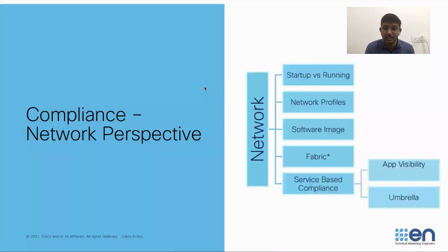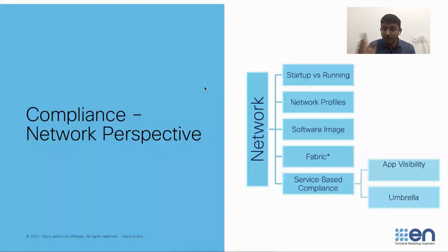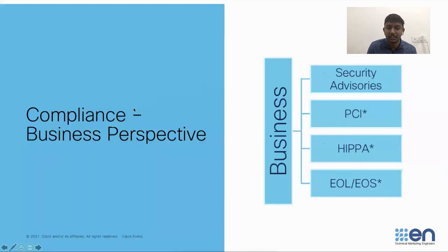On the network compliance side, the features shipping today include startup versus running, network profile, software images, fabric, and service-based compliance - which is app-based or feature-based compliance for things like app visibility, umbrella, or Stealthwatch security analytics. On the business side, you want to see whether your network has PCI or HIPAA standards, end-of-life, end-of-software-maintenance status on network devices, and security advisories. These are available via APIs today and coming to the GUI in the future.